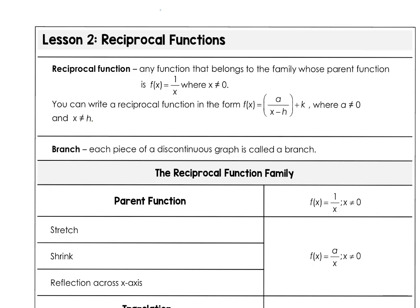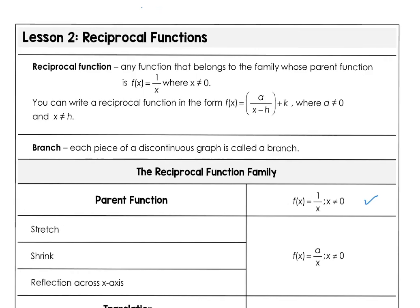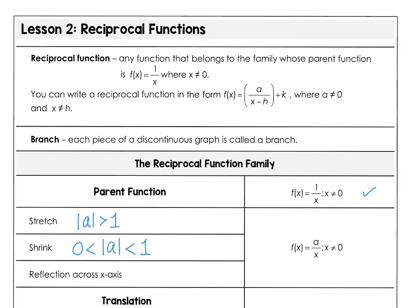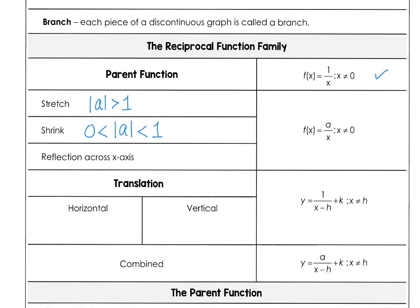In the reciprocal function family, we have the parent function. You can stretch the parent function if you have an a value that is bigger than 1. You can shrink the parent function if your a value is between 0 and 1, or you might think of it as a fraction. If you reflect the graph across the x-axis, that's when the a value is negative.